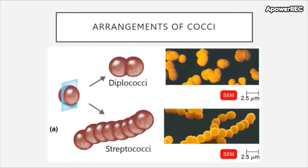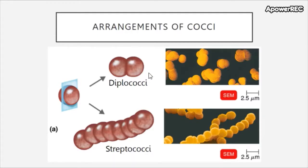Bacteria also have different arrangements. In this image you can see diplococci and streptococci. What determines the arrangements is the plane of division that occurs in the bacterium. If a bacterium divides along only one plane for each of its progeny, then you can have a diplococci or streptococci. Diplococci divide on a single plane and remain in pairs together, however streptococci divide in a single plane and remain attached in long chains.